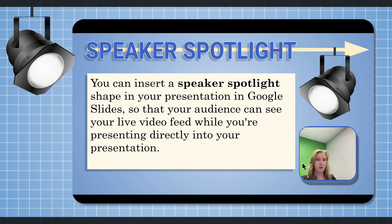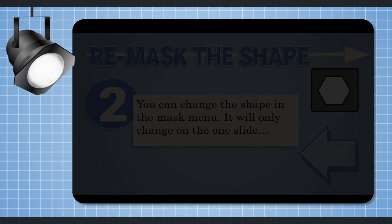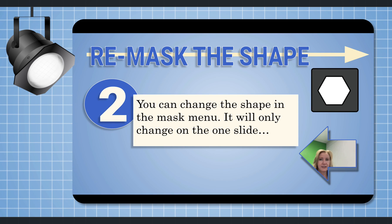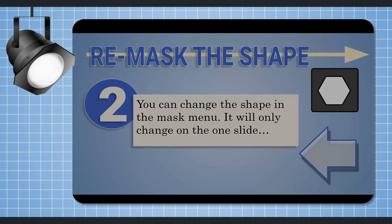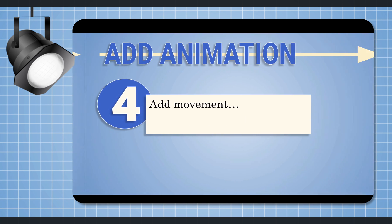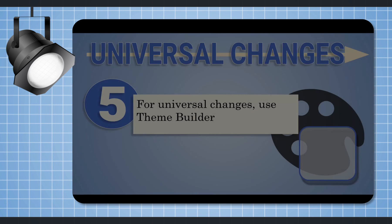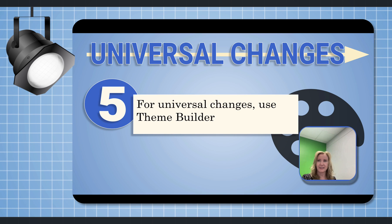Let's go to all the other slides. You can see the different shape that I had. This is blocking the object that's on the page, so you want to make sure to have your Speaker Spotlight in a position that it doesn't block anything. Here's our animation. Last one is Theme Builder for universal changes.